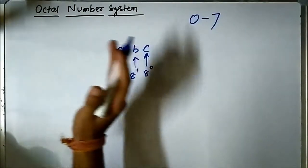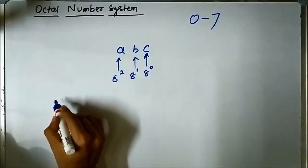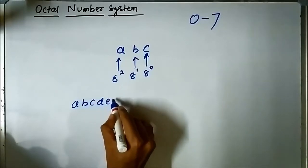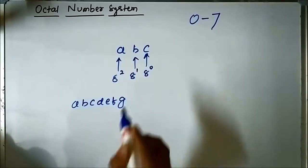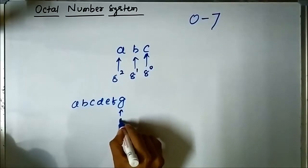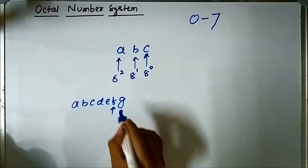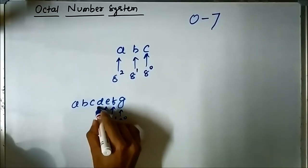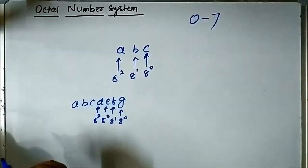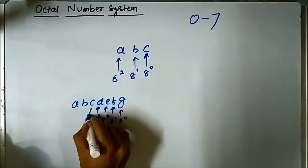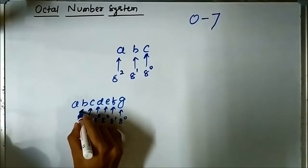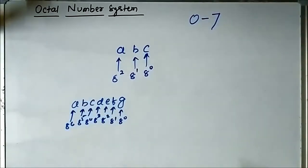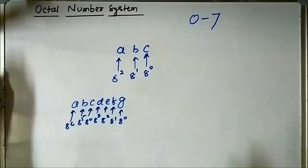Suppose we take a number A B C D E F G. Then G has a weight value of 8 to the power 0, F has 8 to the power 1, E has 8 to the power 2, D has 8 to the power 3, C has 8 to the power 4, B has 8 to the power 5, and A has 8 to the power 6.